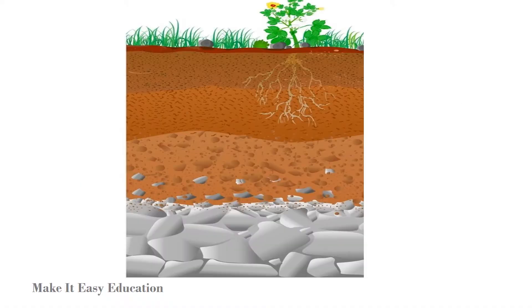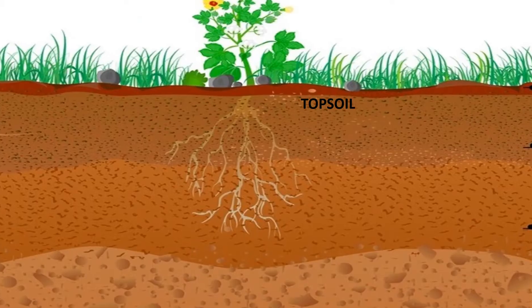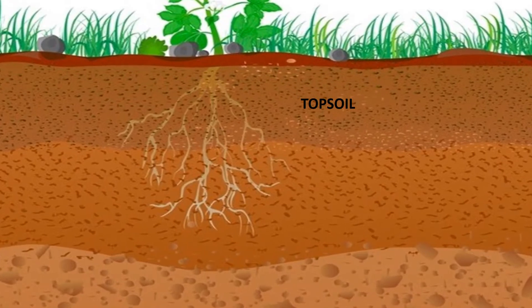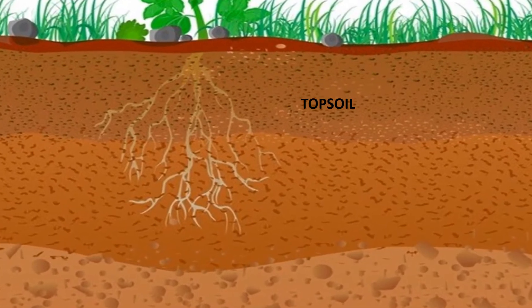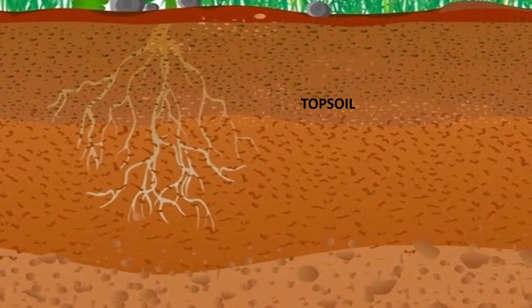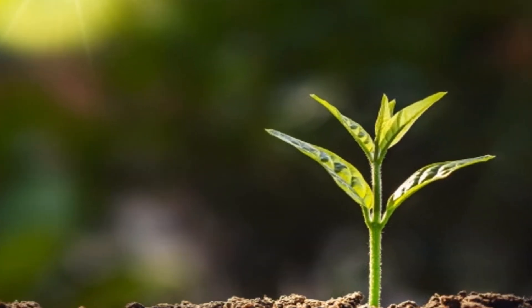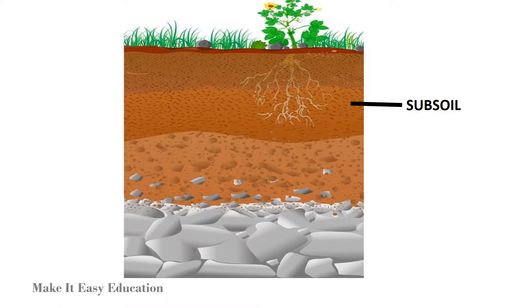Soil profile. Soil profile refers to the layers of soil. Topsoil is the uppermost layer of soil. It contains fine particles of sand, clay, humus, water and air. Topsoil is the best soil for plants to grow.